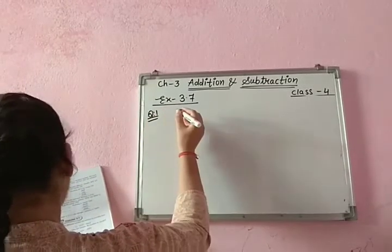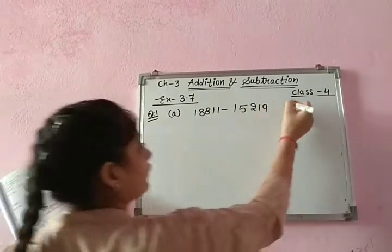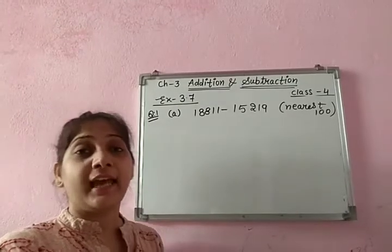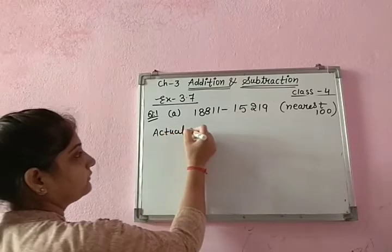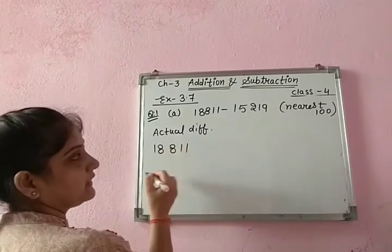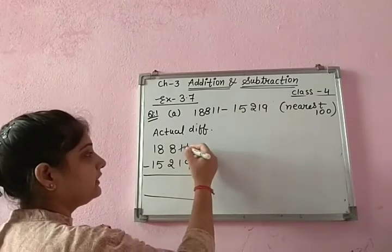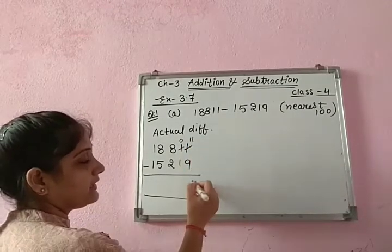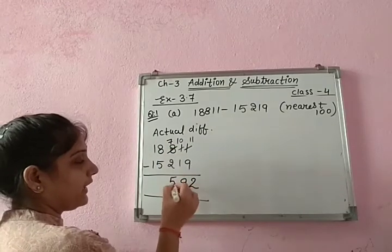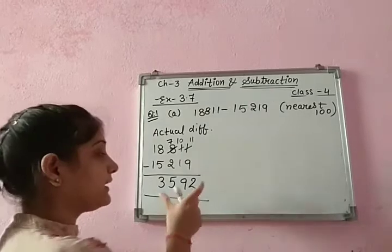First part: 18,811 minus 15,219. We need nearest 100. First, find the actual difference — write the numbers as given: 18,811 minus 15,219. Subtracting: from 1 I cannot subtract 9, so borrow — this becomes 0 and this is 11. 11 minus 9 is 2. From 0 I cannot subtract 1, so borrow — 10 minus 1 is 9. 7 minus 2 is 5. 8 minus 5 is 3. 1 minus 1 is 0. So 3,592 is the actual difference.